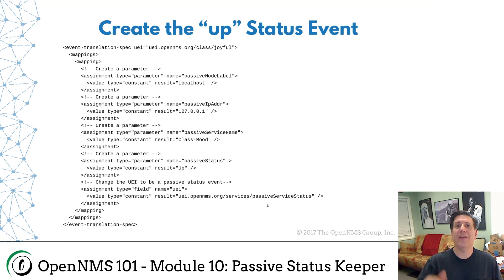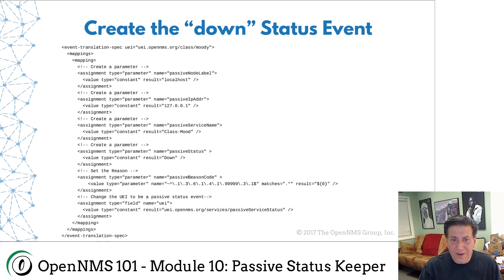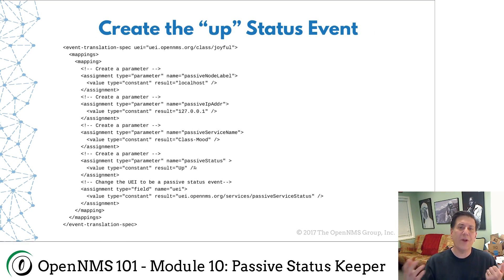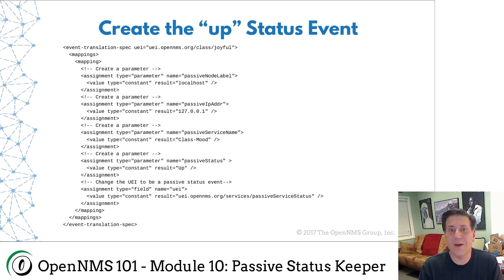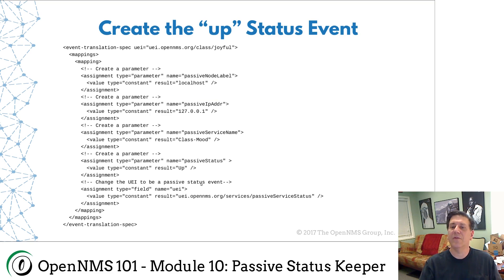The next section is the up event — this is our joyful trap. The joyful trap will come in and get converted into this event, and again we'll set the node label, IP address, etc. I left off the reason code here — you could put it in, but no one really cares about ups. If it's up, everything's okay; I want to know why it's down. So again, we hard code localhost, 127.0.0.1, the class-mood service, status equals 'up,' and we set the event to be the passive service status event.